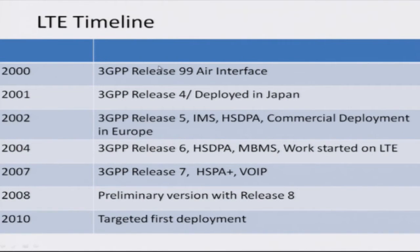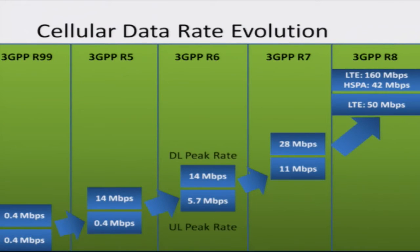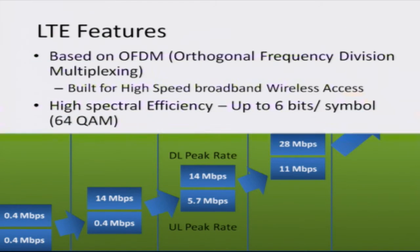LTE is tied to the development of other 3GPP standards. In the early 2000s, different releases of WCDMA were developed, followed by the preliminary version of LTE in 2008 and early deployments in 2010. This shows a systematic evolution of data rates from around 400 kilobits per second in the first WCDMA release, to 14 megabits per second, then 28 megabits per second in HSDPA and HSPA+ releases, followed by LTE which can enable about 160 megabits per second downlink and 50 megabits per second uplink.